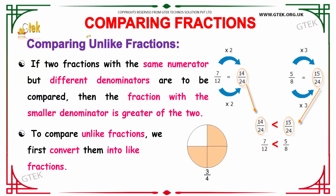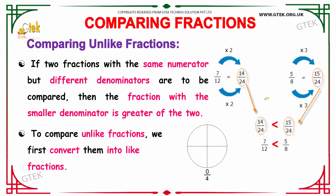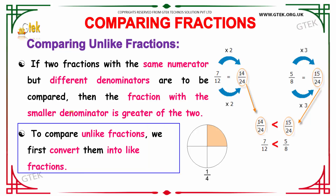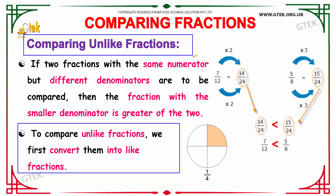Now let's move on to the comparison of unlike fractions. In terms of unlike fractions, if two fractions have the same numerator but different denominators, the fraction with the smaller denominator is the greatest one. In order to compare unlike fractions, we first convert them into like fractions. This is the foremost step in comparing unlike fractions.